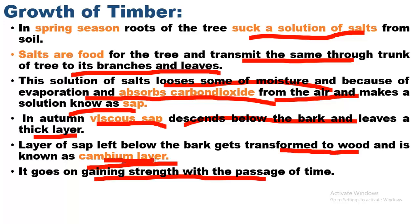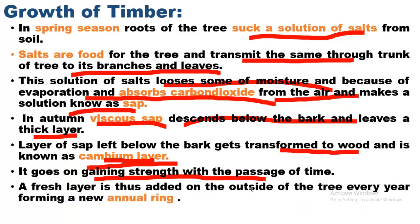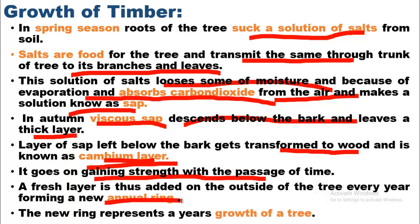The cambium layer is a soft layer between the medulla and outer bark, and it is not as hard as heartwood. It goes on gaining strength with the passage of time — as time increases, an annual ring is added and it becomes part of the sapwood. A fresh layer is thus added to the outside of the tree every year, forming a new annual ring. Each new ring represents one year's growth of the tree.